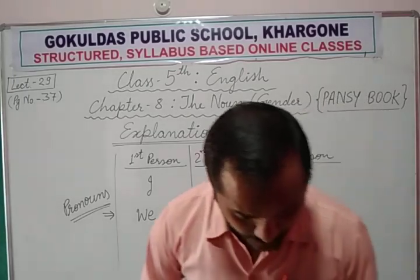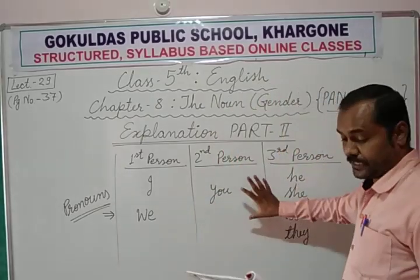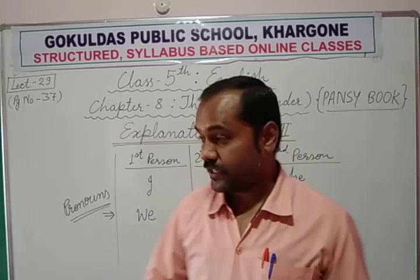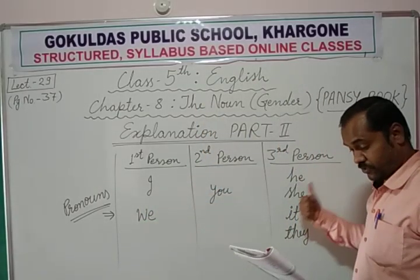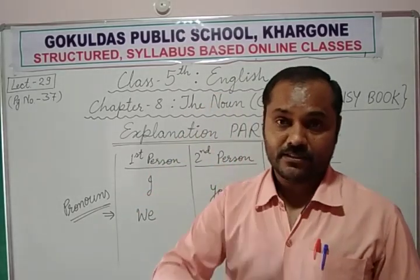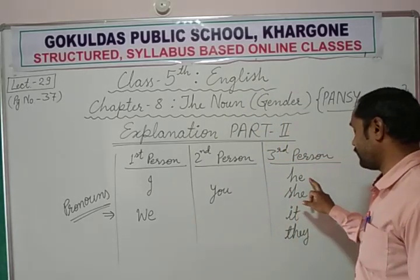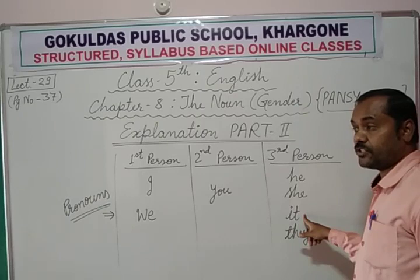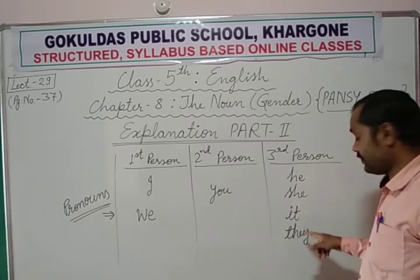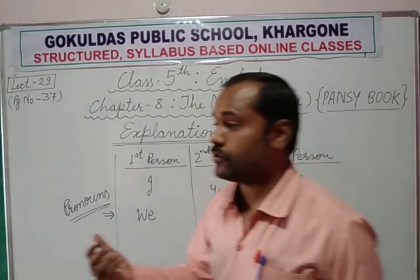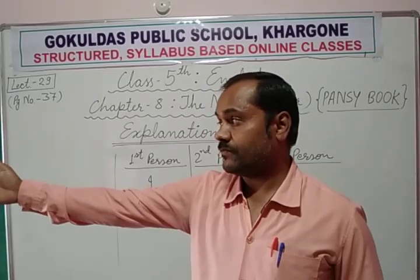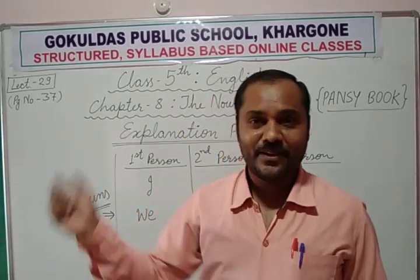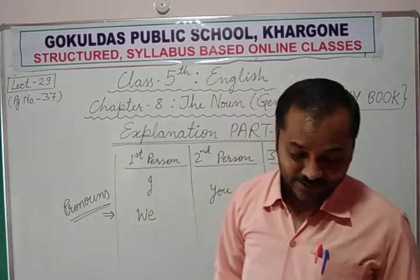Now, keeping this in mind, let's see the next table. We use pronouns of the third person to refer to gender. He is used for only males. She is used for only females. It is neuter gender, used for non-living things. And they is a common gender, because it can be used for both girls and boys. 'They are going' — whether they are girls or boys, they can be commonly used for both.